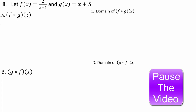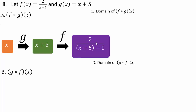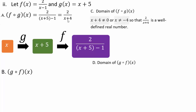For f composite g of x, start with g: g takes x and makes it x plus 5. Then that enters f, giving 2 divided by (x plus 5) minus 1, since x was replaced with x plus 5. Simplifying gives 2 over (x plus 4). For the domain, the denominator cannot be zero, so x cannot be negative 4. The domain is negative infinity to negative 4 union negative 4 to infinity.